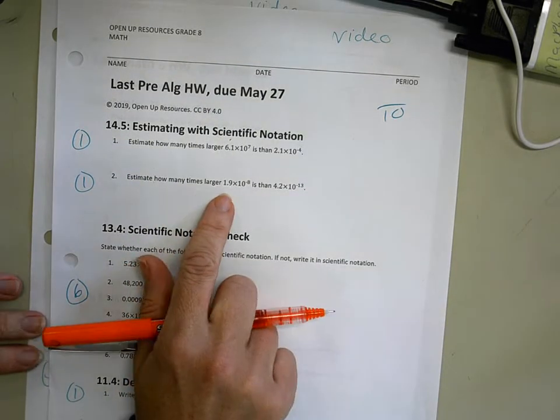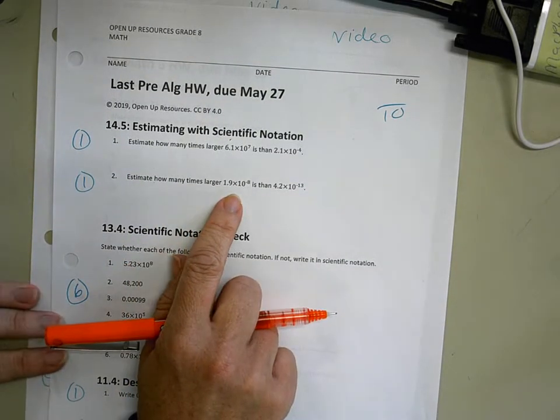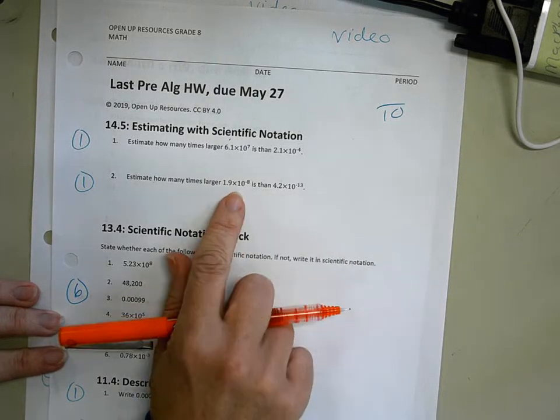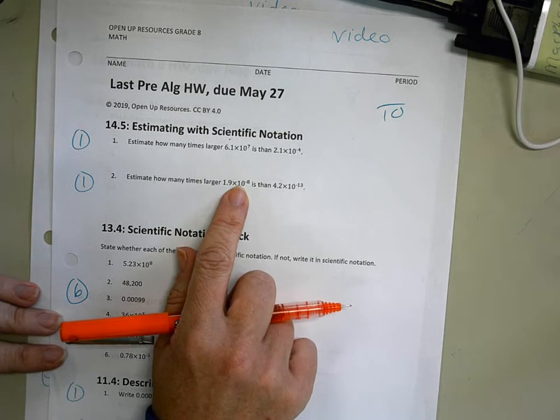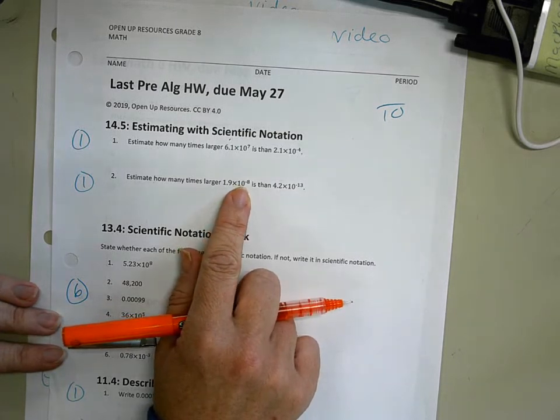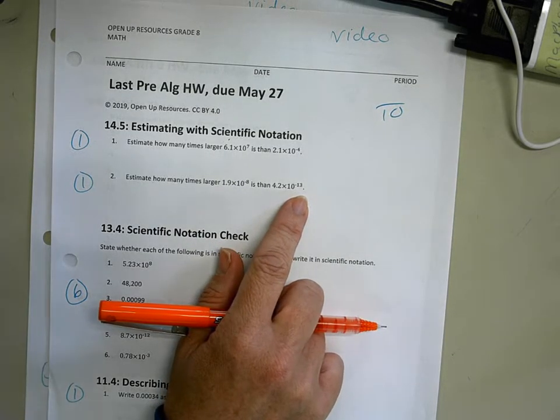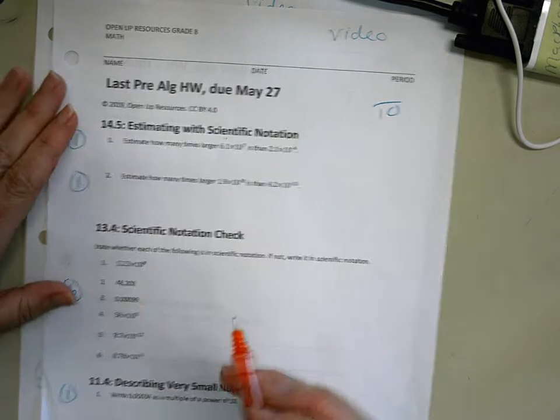Estimate how many times larger 1.9 times 10 to the negative 8 is than 4.2 times 10 to the negative 13. So I know that this is the larger number because its exponent is only 10 to the negative 8, as opposed to 10 to the negative 13. Obviously, both very, very small decimal values.